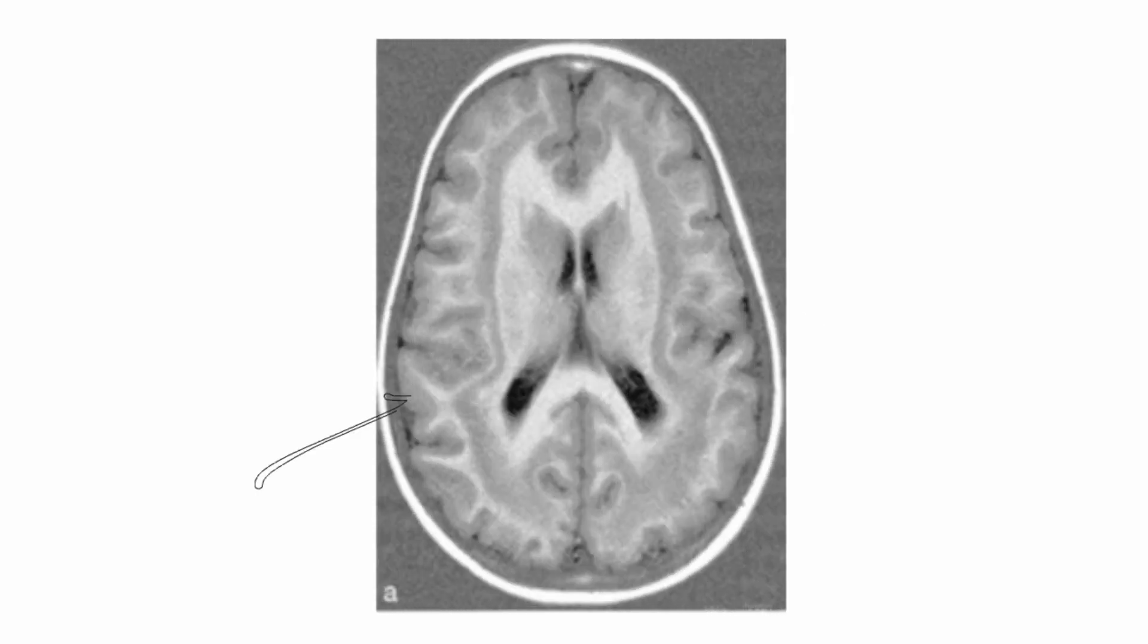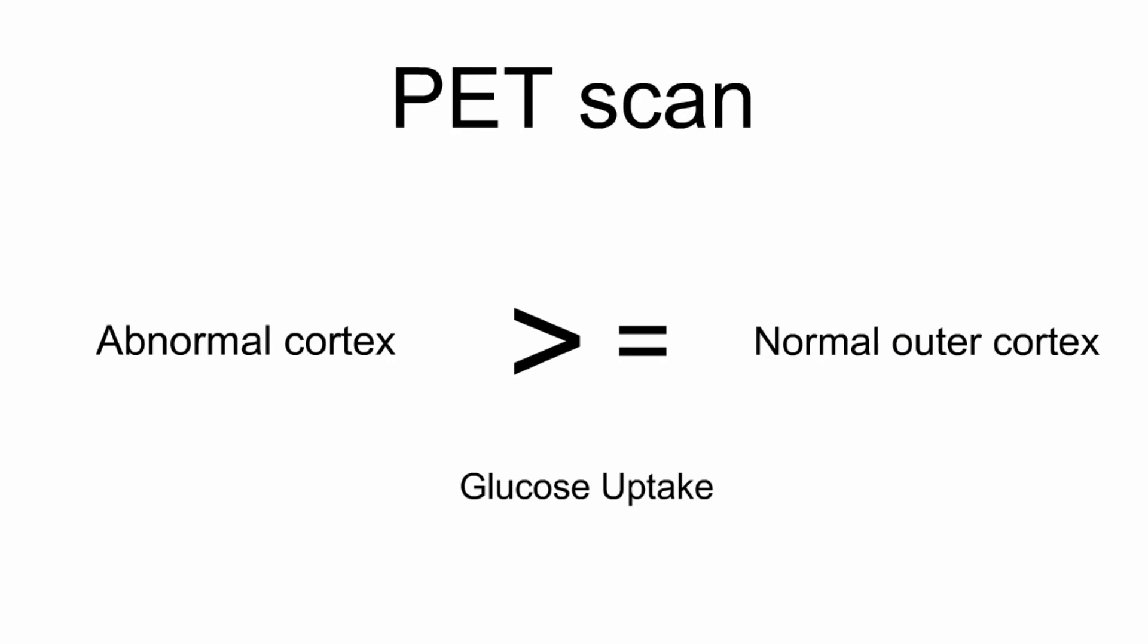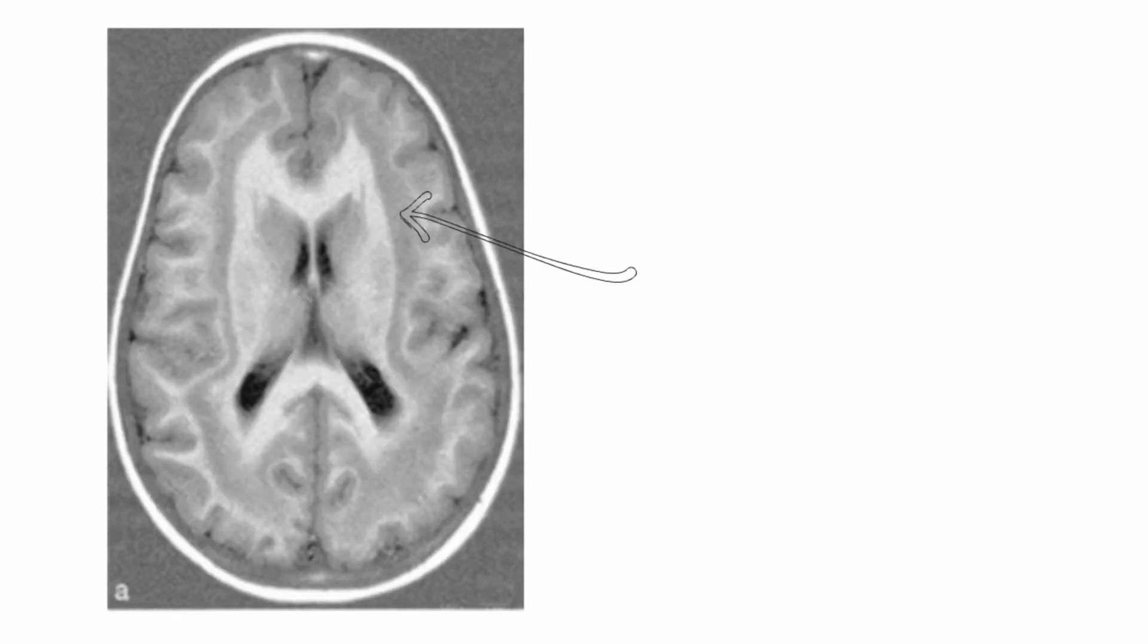The mainstay of diagnosis is brain MRI, which shows the characteristic heterotopic band in all imaging sequences. When studied by PET scan, the abnormal cortex was found to have a glucose uptake that is similar to or even greater than normal cortex. In other words, this extra layer of cortex is active and alive.